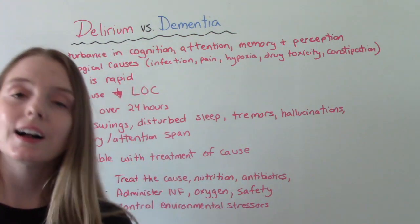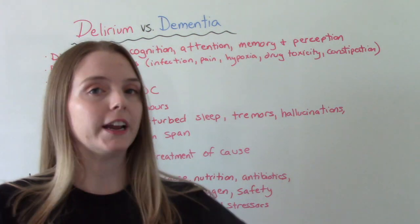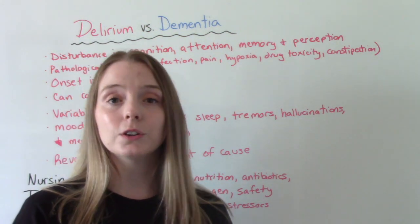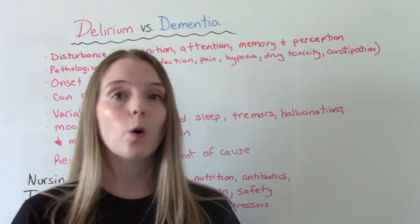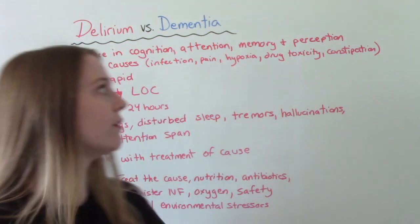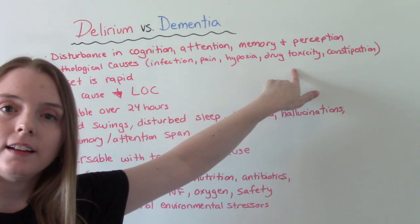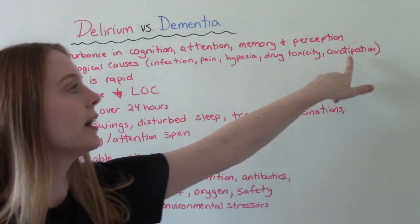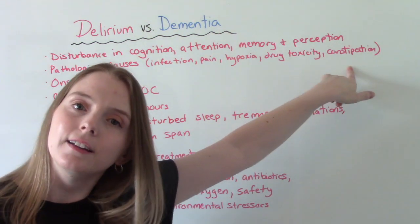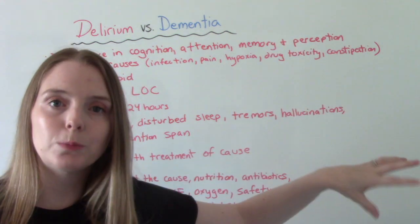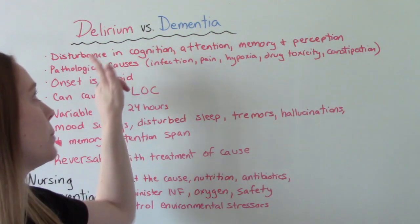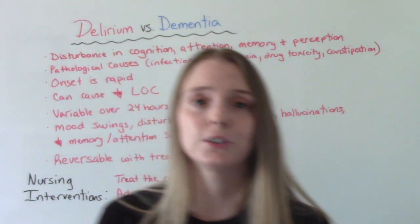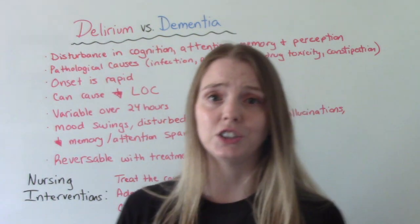For example, because of the normal changes of the body that occur with aging, the older adult is more likely to have drug toxicity. They're also more likely to be constipated. So they are a higher risk group when it comes to experiencing delirium, just because of those normal physiological changes of aging.